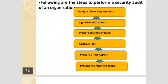To summarize, the six steps for performing a security audit are: one, analyze client requirement; two, sign a non-disclosure agreement with the client or organization; three, prepare a testing schedule; four, conduct the test; five, prepare a test report; six, present the report to the client. Thank you.